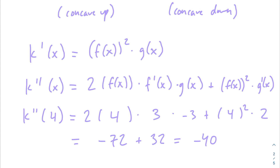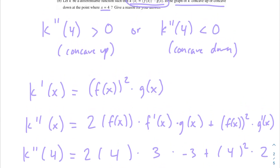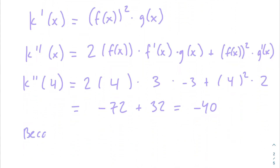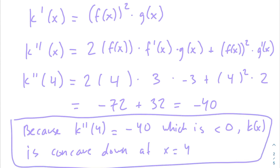Don't just box −40 as the answer — we still need to connect the dots. Since k''(4) = −40, which is less than 0, the graph of k is concave down at x = 4. That is our answer for part b.